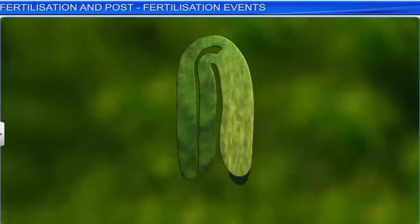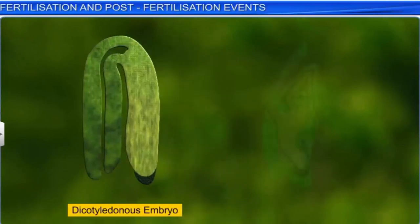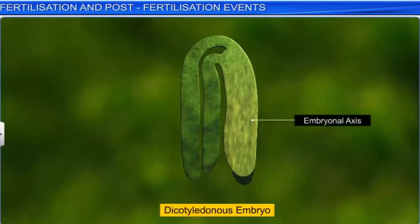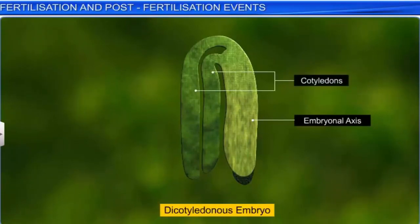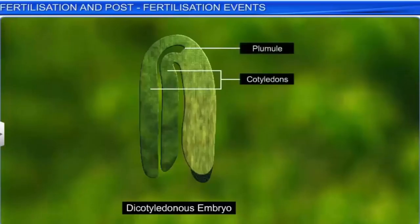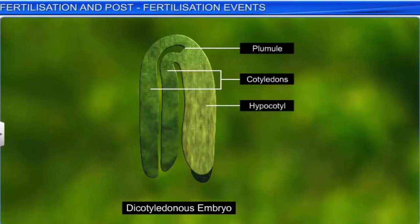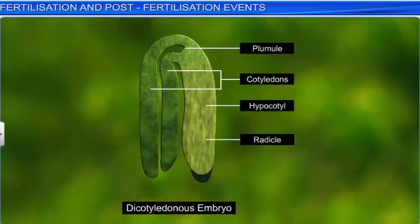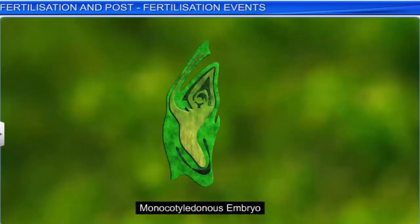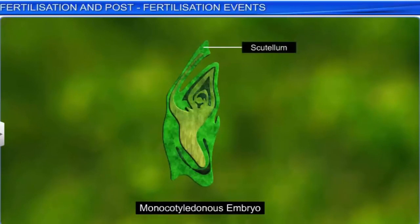The structure of a mature dicotyledonous embryo is nonetheless different from that of a monocotyledonous embryo. A dicotyledonous embryo consists of an embryonal axis and two cotyledons. The epicotyl — the portion of the embryonal axis above the level of the cotyledons — terminates with the plumule or stem tip. Below the level of the cotyledons is a cylindrical portion called the hypocotyl, that terminates at the radicle or root tip, which is covered with the root cap. A monocotyledonous embryo, commonly found in the grass family, has only one cotyledon called a scutellum, situated towards the lateral side of the embryonal axis.